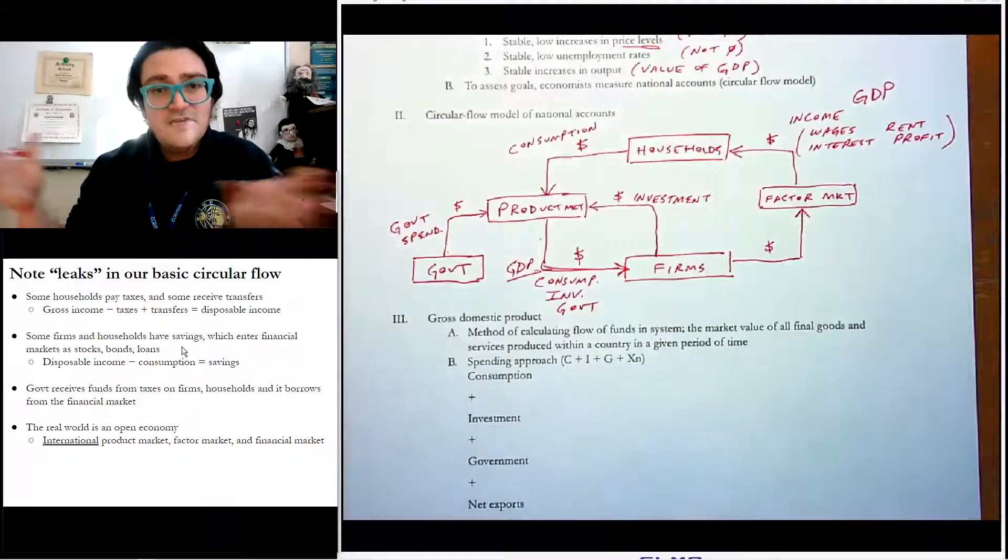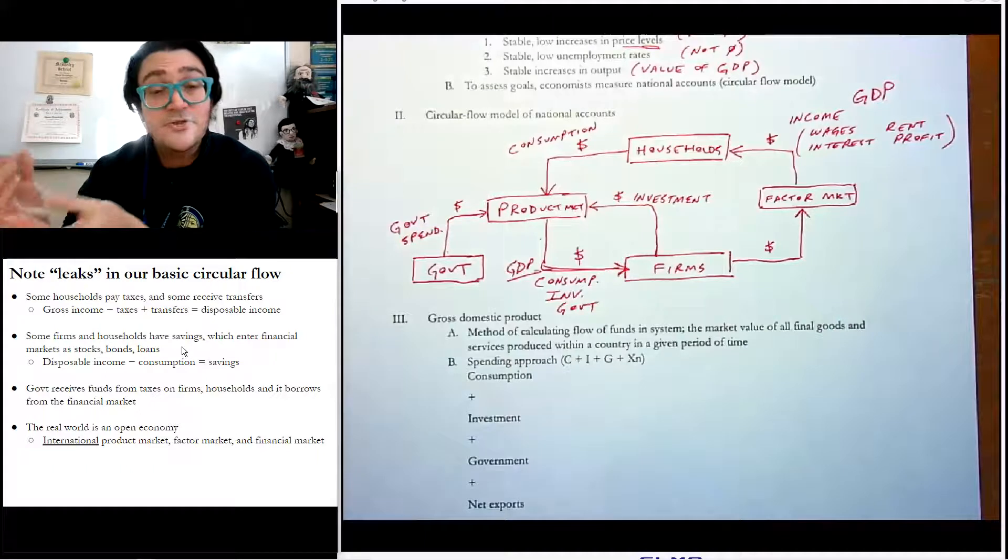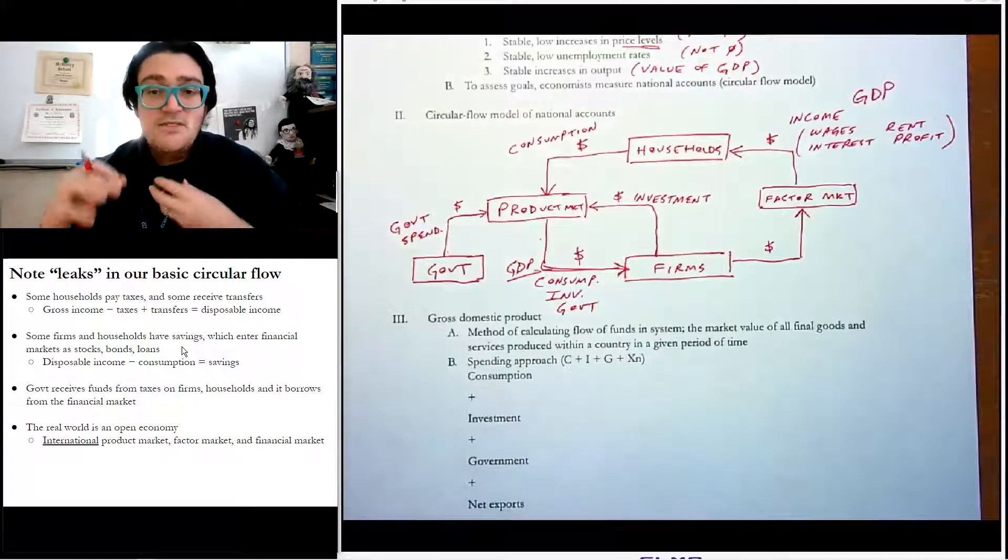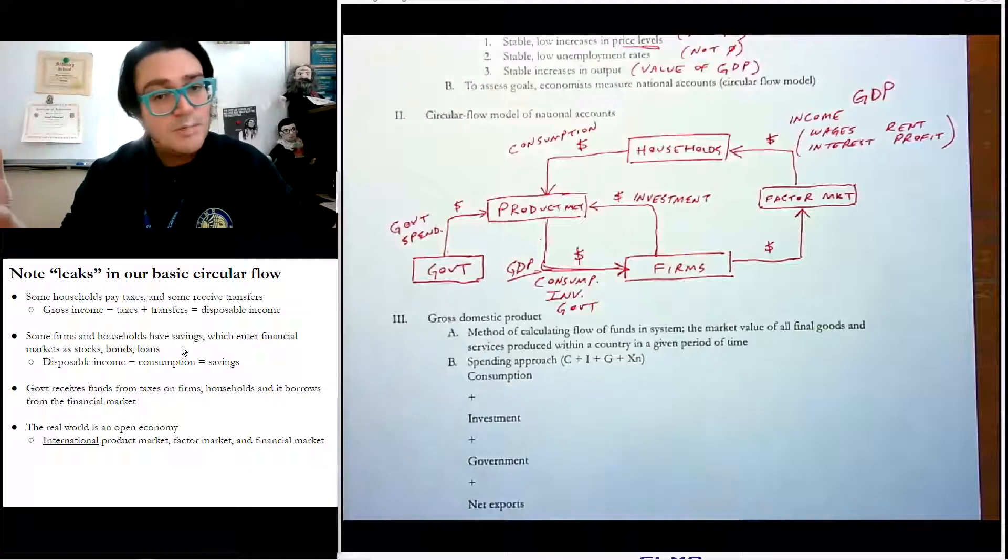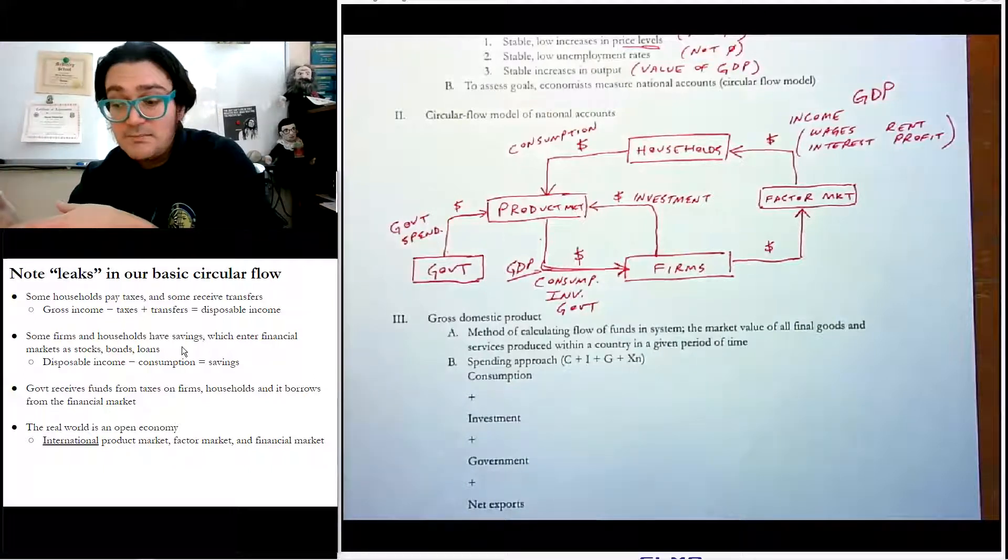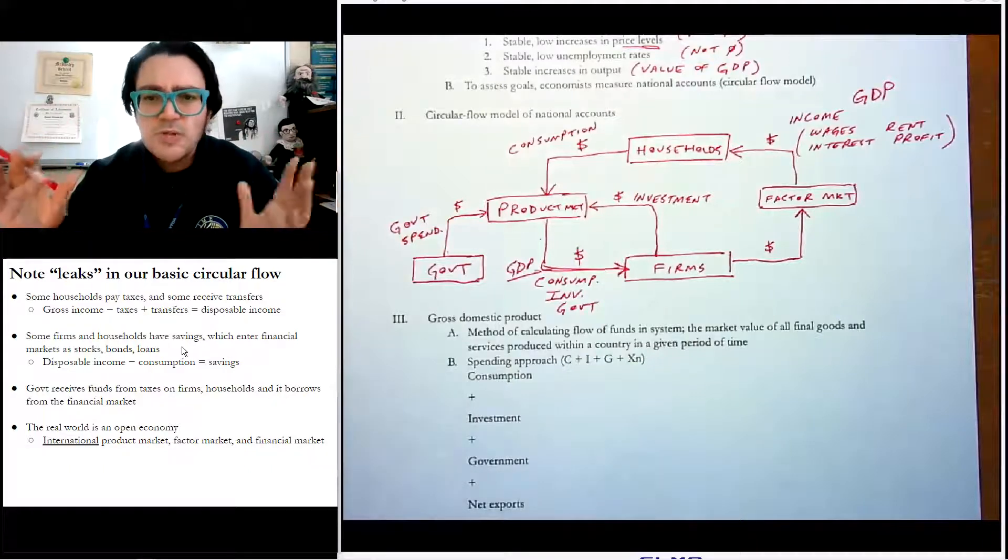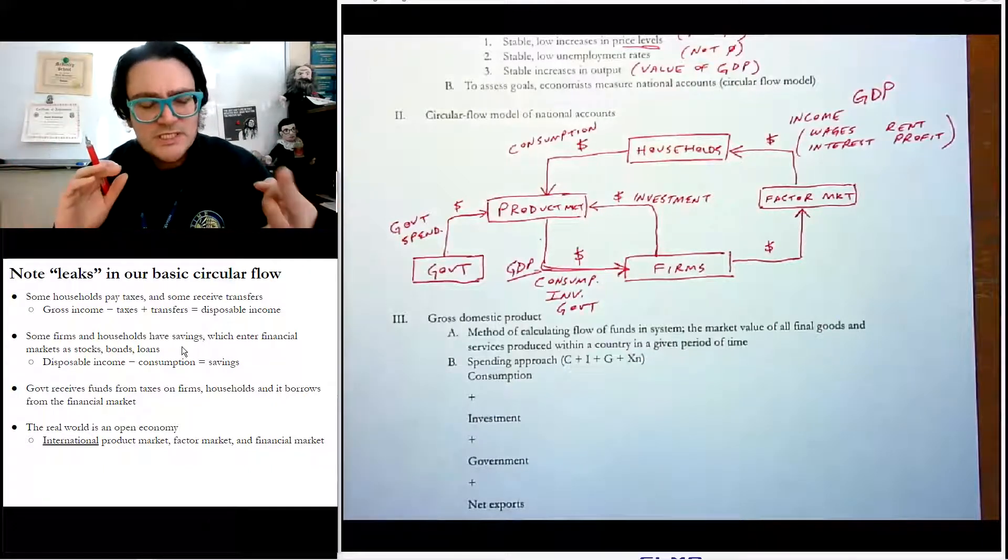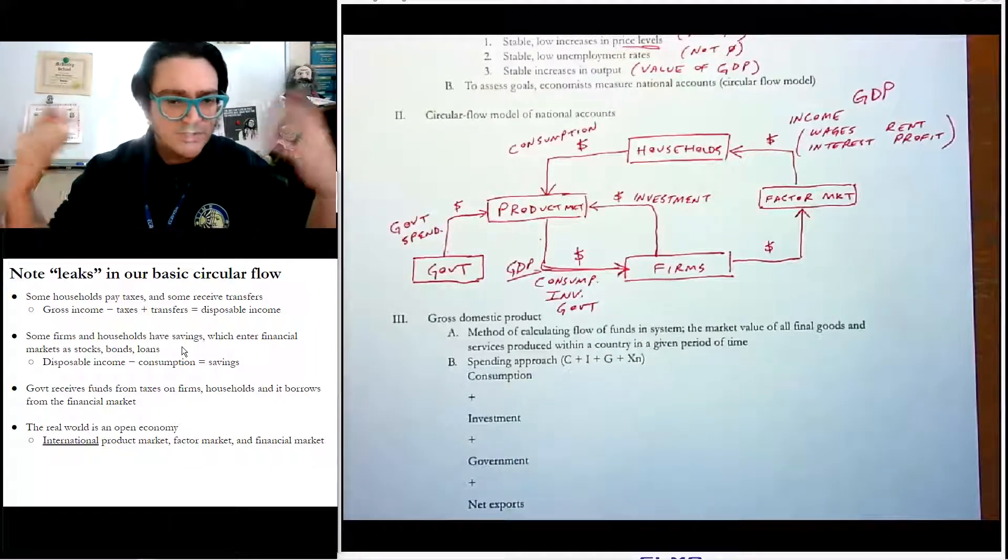And so some part of that disposable income becomes consumption. But we know that in reality, households also will save some money. So that's why I put here that there is this leak in the circular flow model called the savings. And that savings goes into a third market that we're actually going to introduce in this class called the financial market. And then that market, some of that savings goes to the government because the government borrows money. And sometimes that money goes to firms because they borrow money. So there's a little bit more complex here. We said that in the third part, the government gets funds from taxes on firms, households, blah, blah, blah.